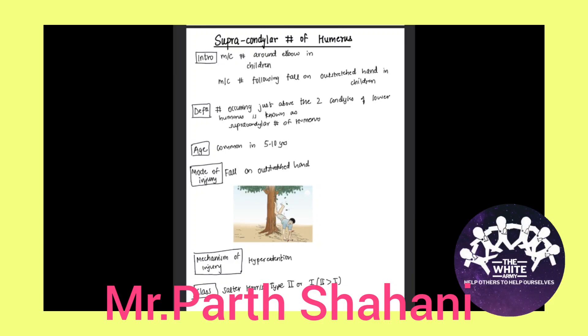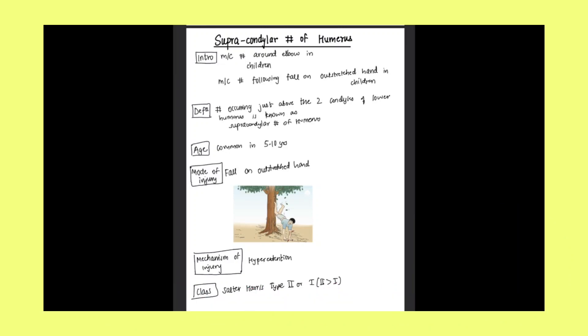Supracondylar fracture of humerus is the most common fracture around the elbow in children. It is most common fracture following fall on outstretched hand in children. Coming to definition, it's a fracture occurring just above the two condyles of the lower end of humerus. It is known as supracondylar fracture of humerus.